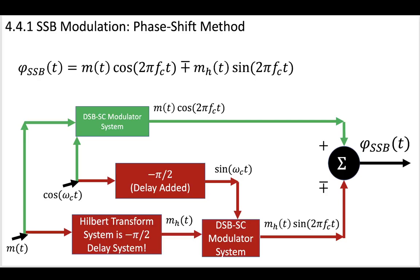So in order to obtain a single sideband signal, the first method you could use is this phase shift method. And this phase shift method relies on all of the information that we just learned.